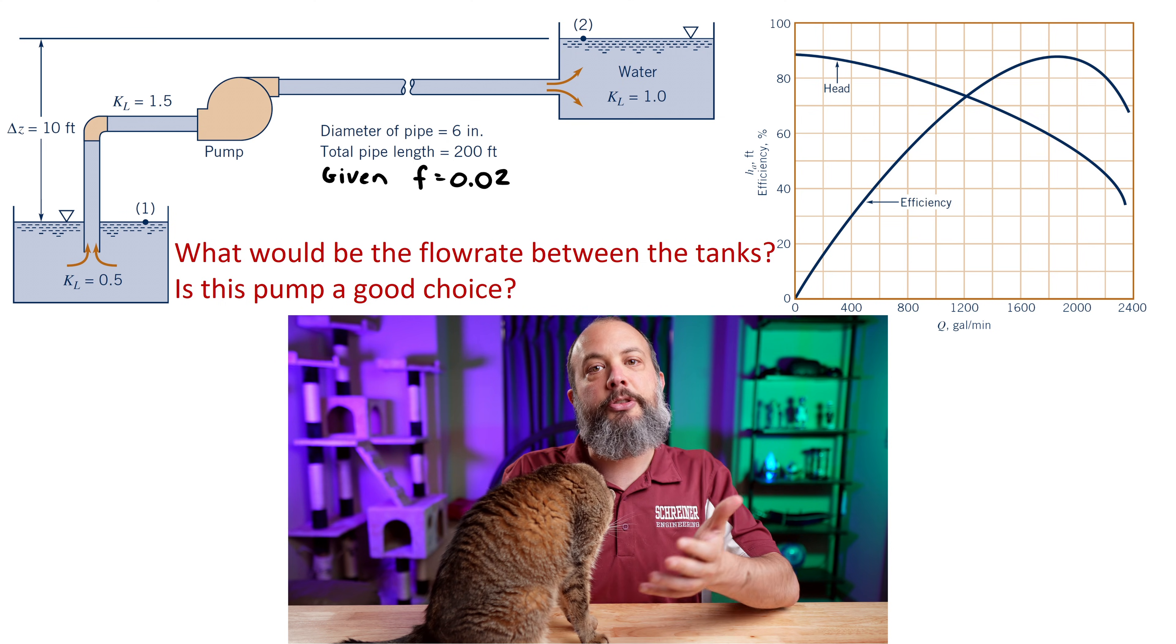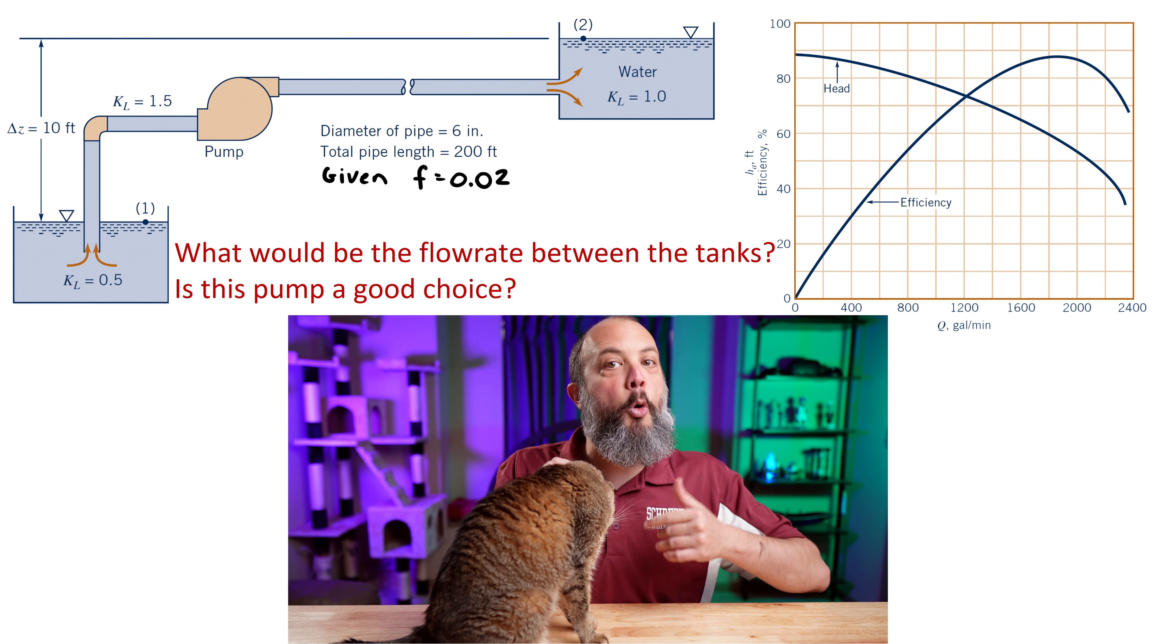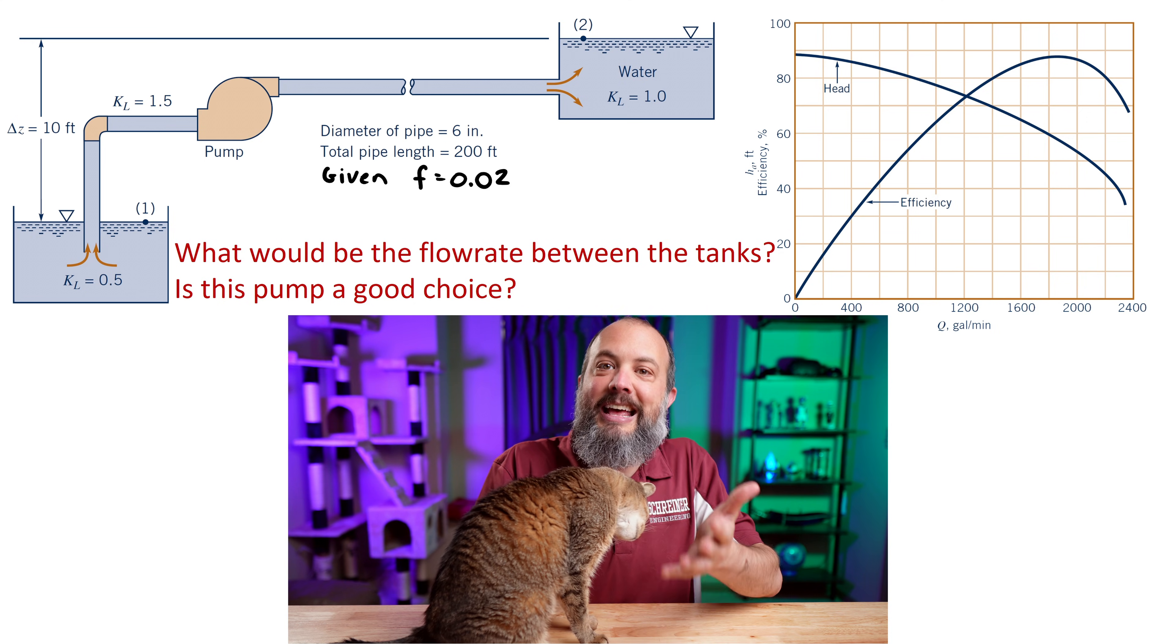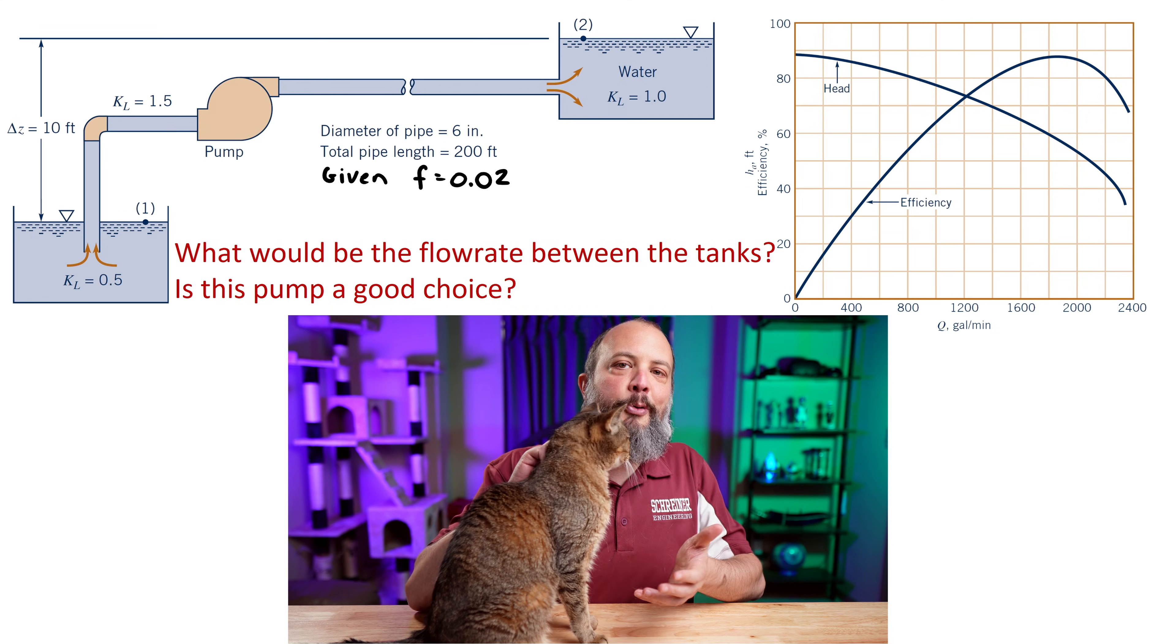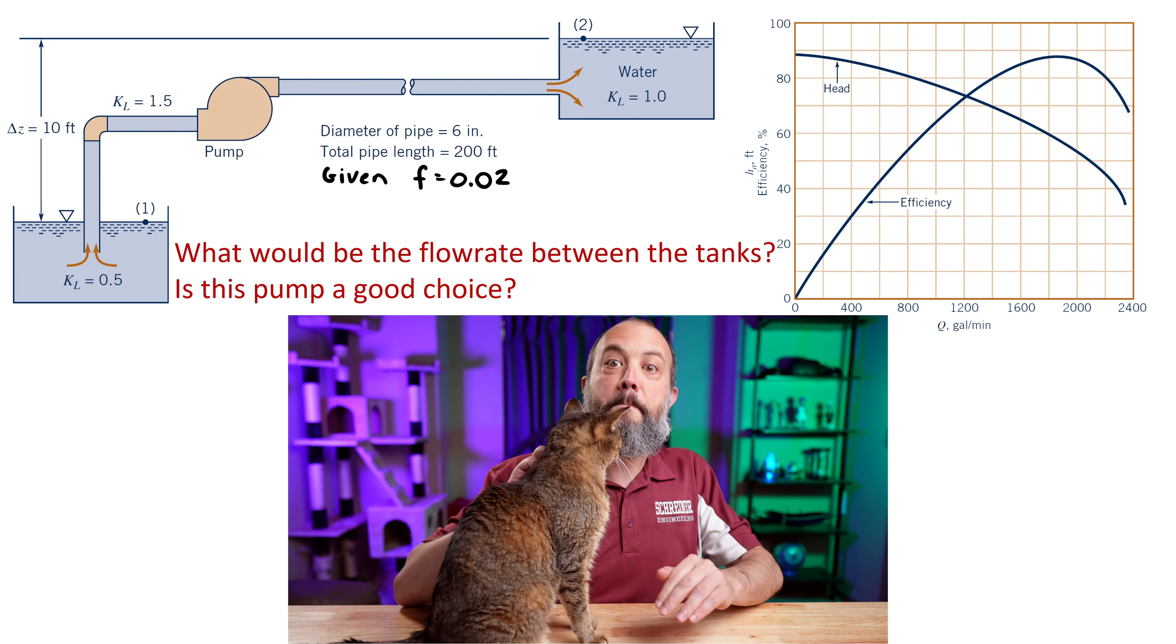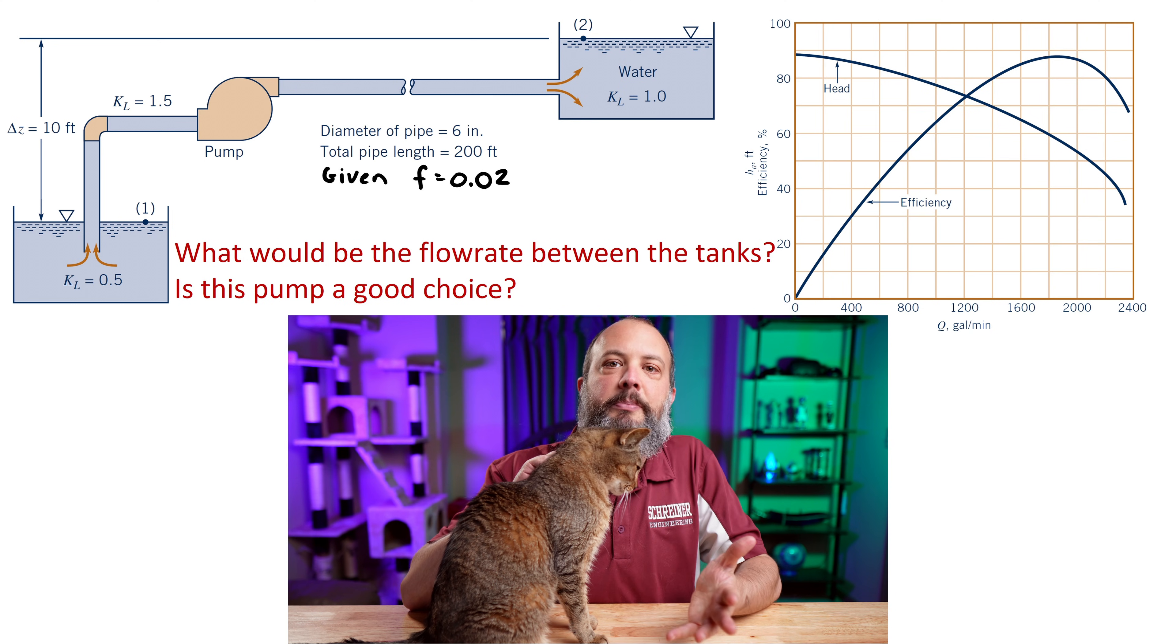For a system, the behavior is opposite of pumps. As flow rate increases through your system, you'll get more losses due to friction, right? Head loss will increase. And therefore, the larger the flow rate, the more pressure you need the pump to provide.